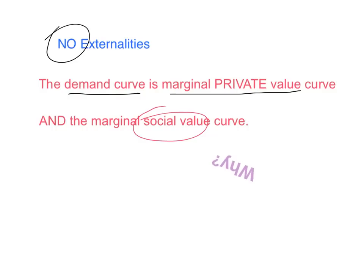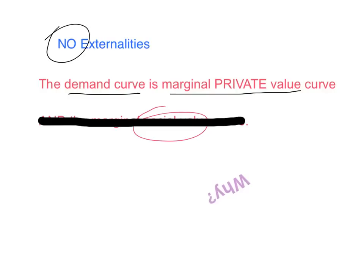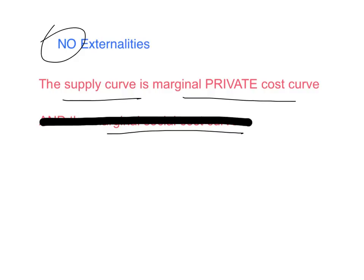But if we have externalities, there may be values created outside the market, so that the demand curve will still be the marginal private value curve, but it may no longer be the marginal social value curve. Similarly, if there are no externalities, the supply curve is also the marginal private cost curve and it is also the marginal social cost curve — because the only costs incurred are the costs of the producers. But if there are external costs outside the market, that relationship may no longer hold.